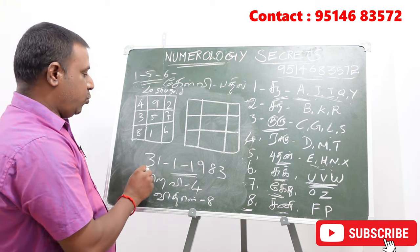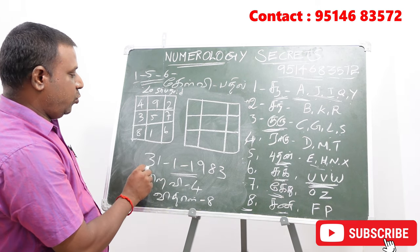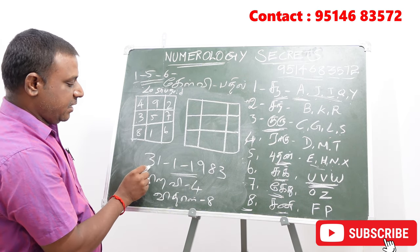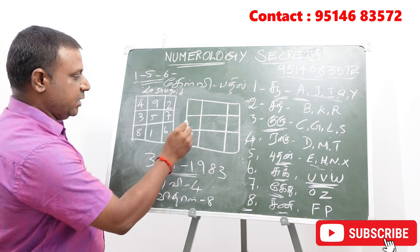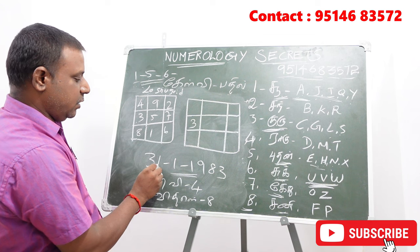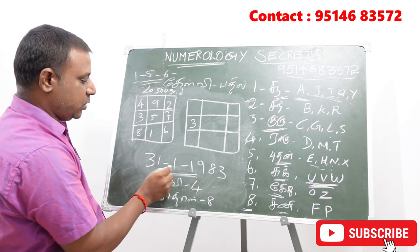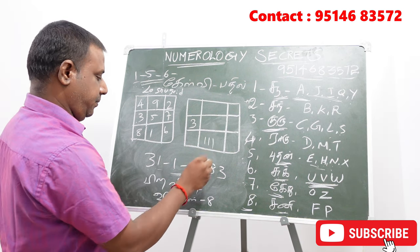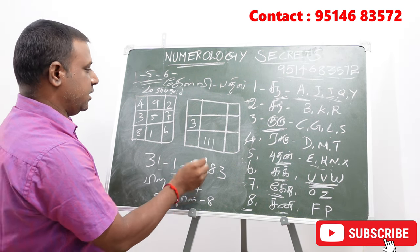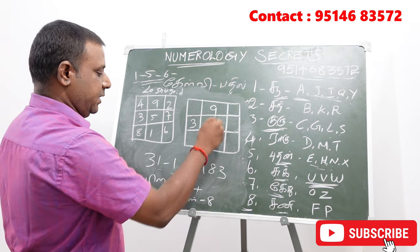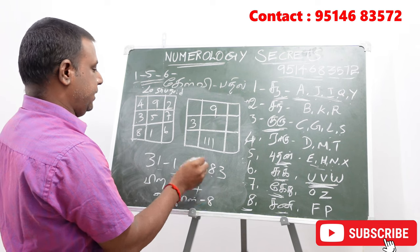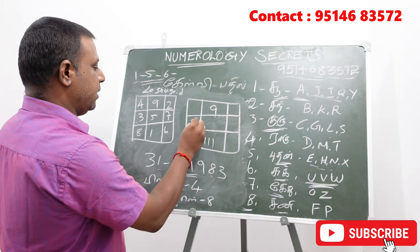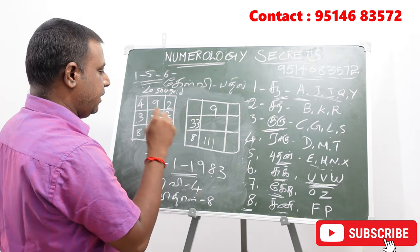Now, if you see 3, we have 3 here. 1, 1, 1, 3, 3, 3, 1, 1, 1, 1, 1, 2, 3, 3, 3, 3, 3.